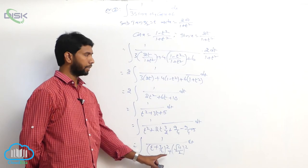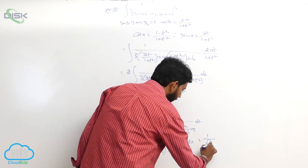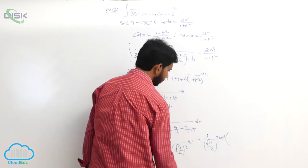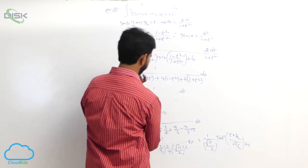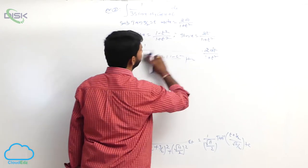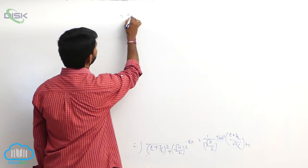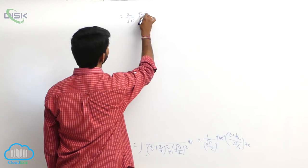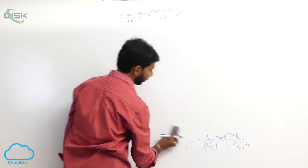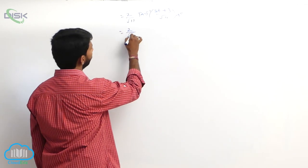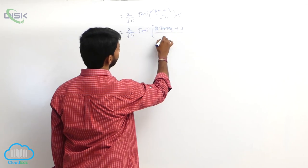This is of the form integral of 1 by (x square plus a square) dx, whose formula is (1/a) tan inverse (x/a) plus constant. Here a equals root 11 by 2, so the result is (2 by root 11) tan inverse of (2t plus 3) by root 11 plus constant. Substituting t equals tan(x/2), the final answer is (2 by root 11) tan inverse of (2 tan(x/2) plus 3) by root 11 plus some constant.